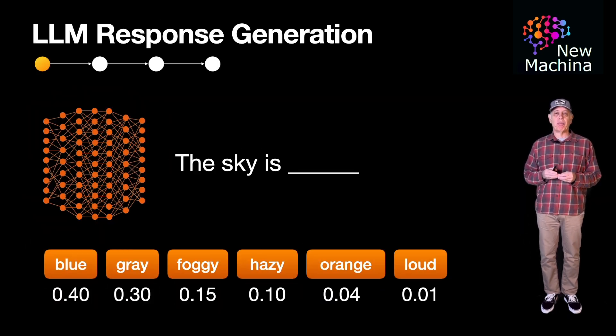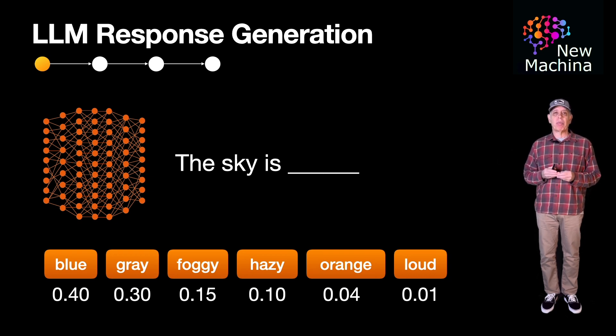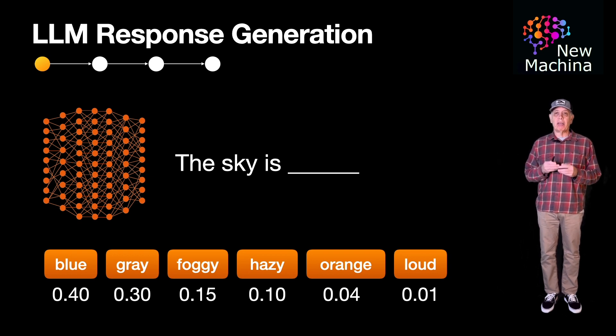An LLM determines the next word using a combination of statistical probabilities and learned patterns from large data sets of text. In the example with the output text 'the sky is blank', the word blue has a 40% chance of being selected and the word gray has a 30% chance of being selected, and so on.